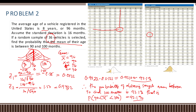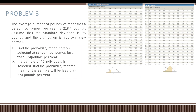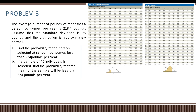Let us proceed with problem number three. The average number of pounds of meat a person consumes per year is 218.4 pounds. Assume the standard deviation is 25 pounds and the distribution is approximately normal. Find (a) the probability that a randomly selected person consumes less than 224 pounds per year, and (b) the probability that the mean of a sample is less than 224 pounds.